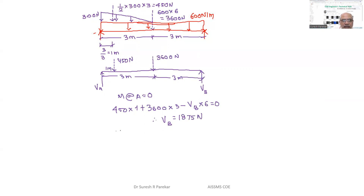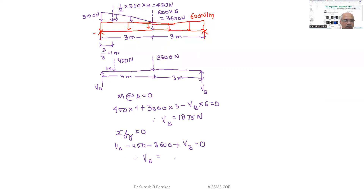Applying summation F_Y = 0: V_A − 450 − 3600 + V_B = 0. Substituting V_B = 1875, we get V_A = 2175 Newtons.